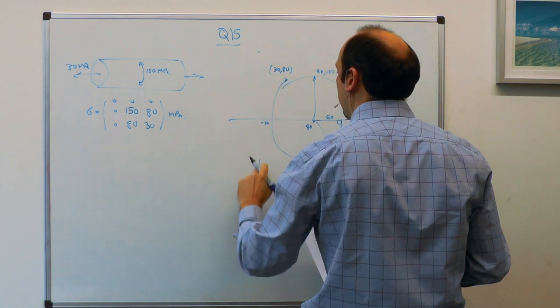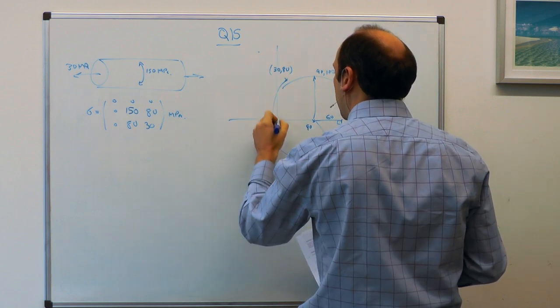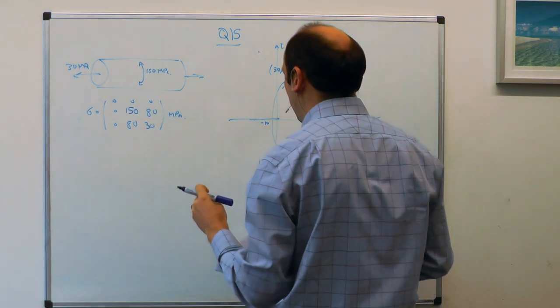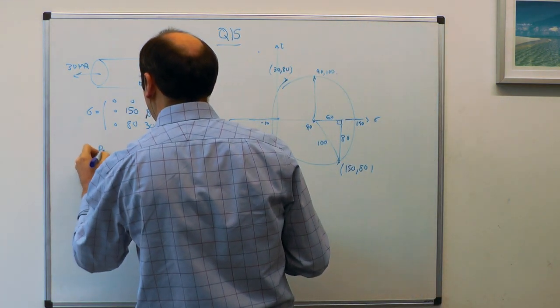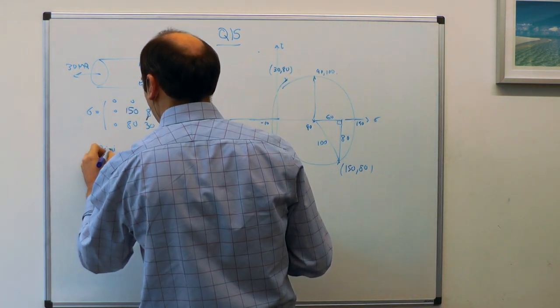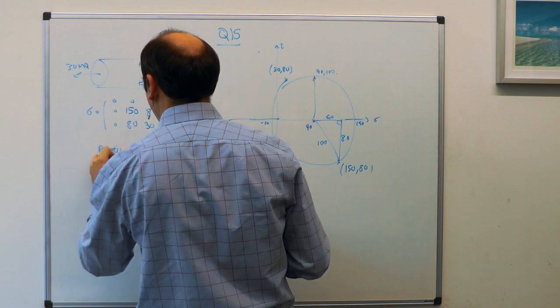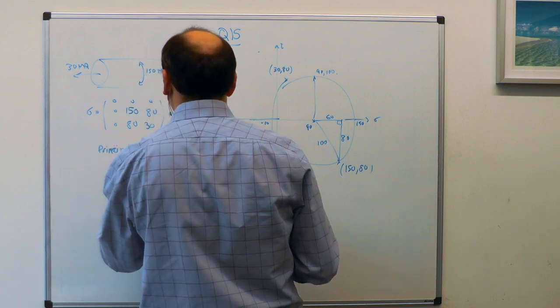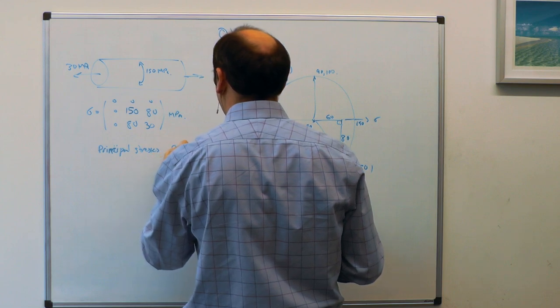So we need to move the vertical axis to restore the zero to our diagram. So the principal stresses are 90 plus or minus 100 MPa.